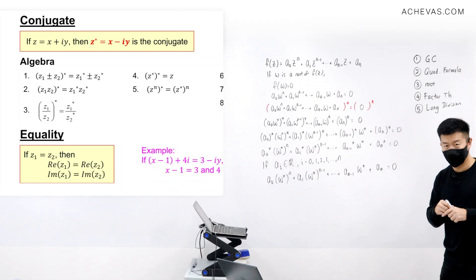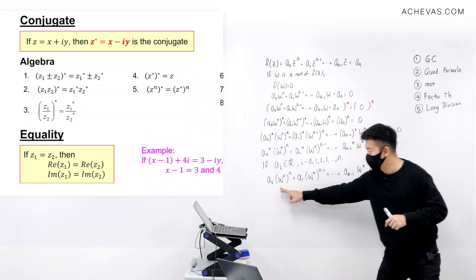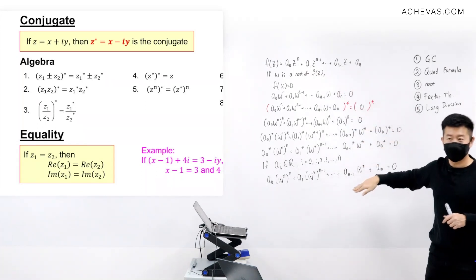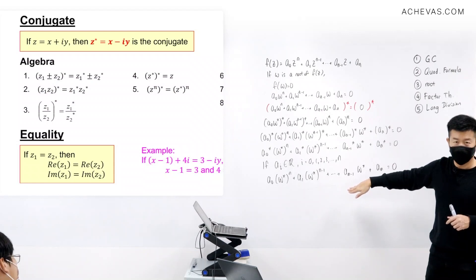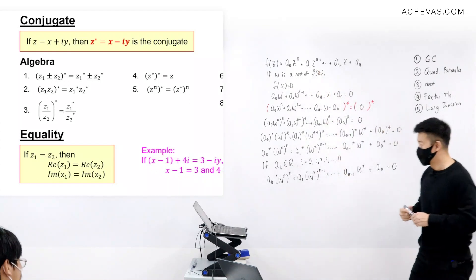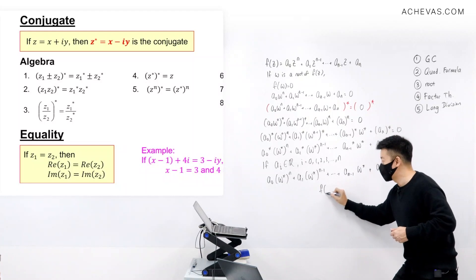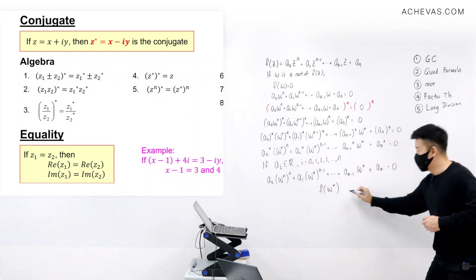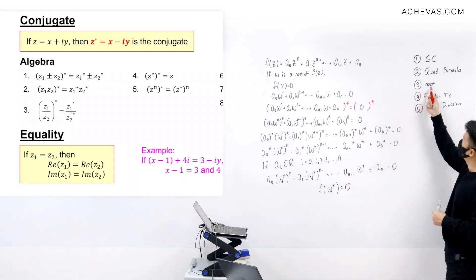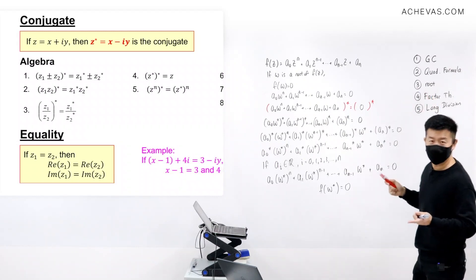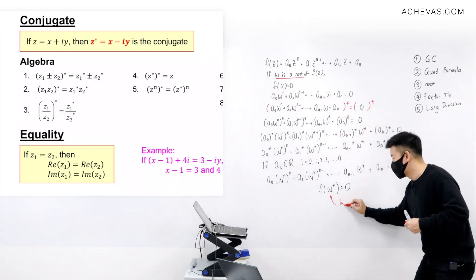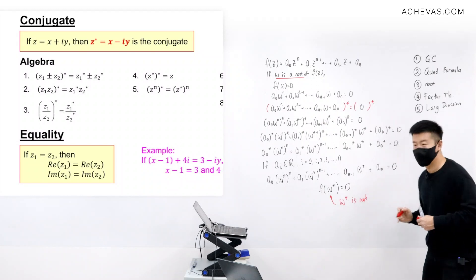Now we can see some results. Are you able to see the results already? Can you see that this line here is exactly the same as the original line, except that z is now replaced by w conjugate? This means the entire left-hand side can be written as f(w conjugate), and this is equal to 0.